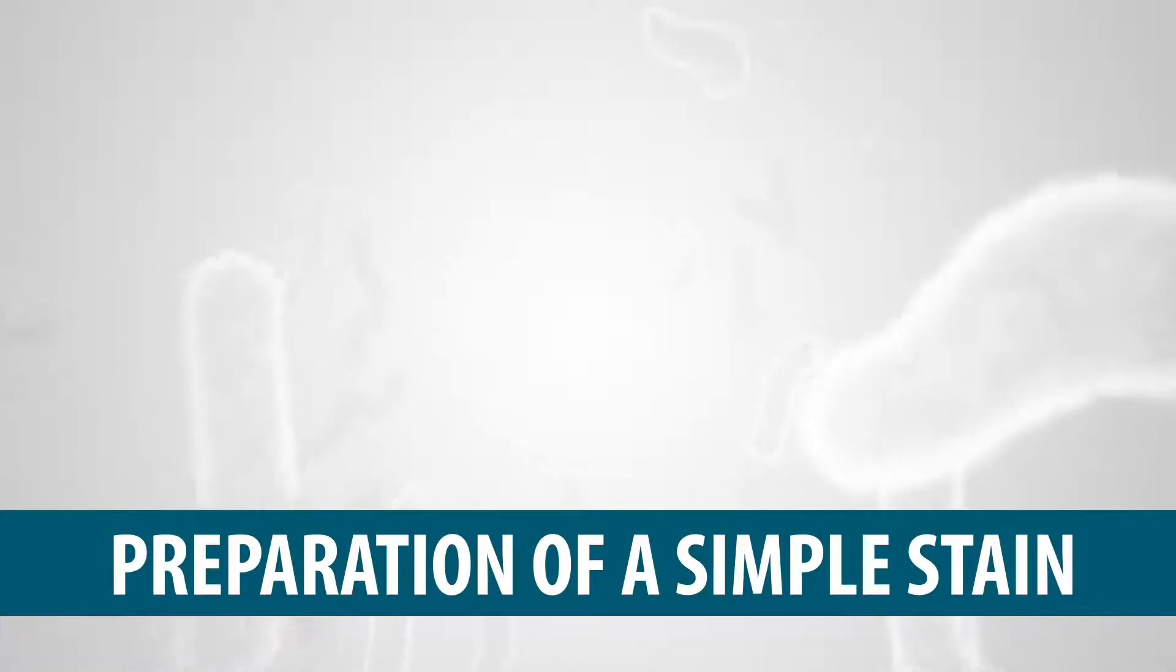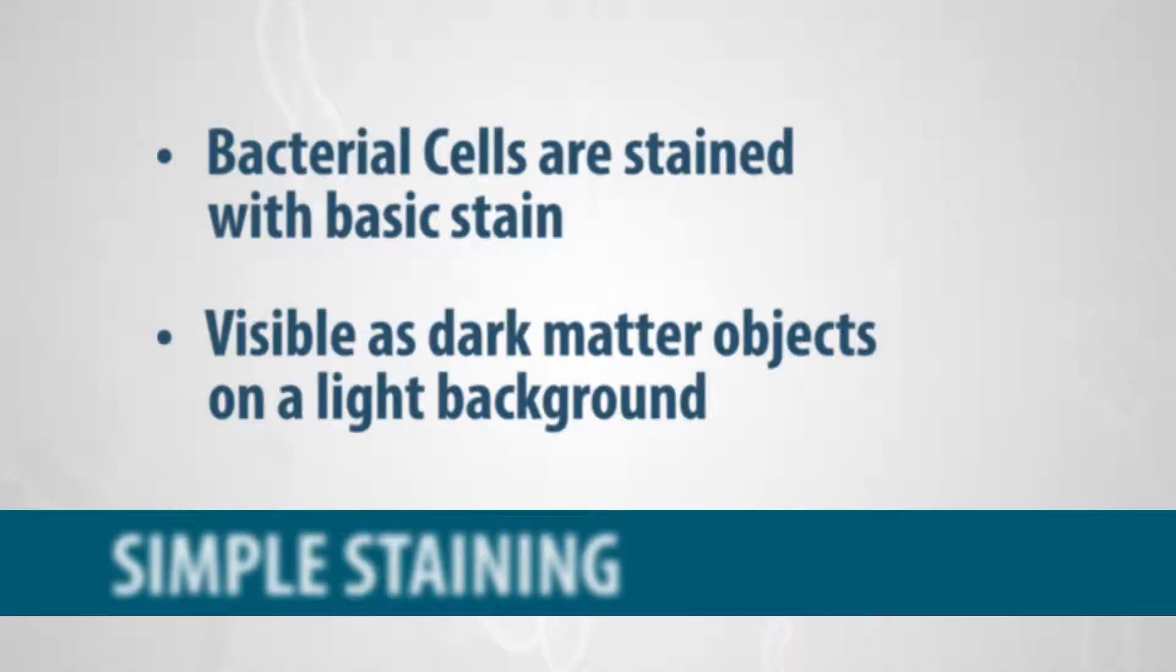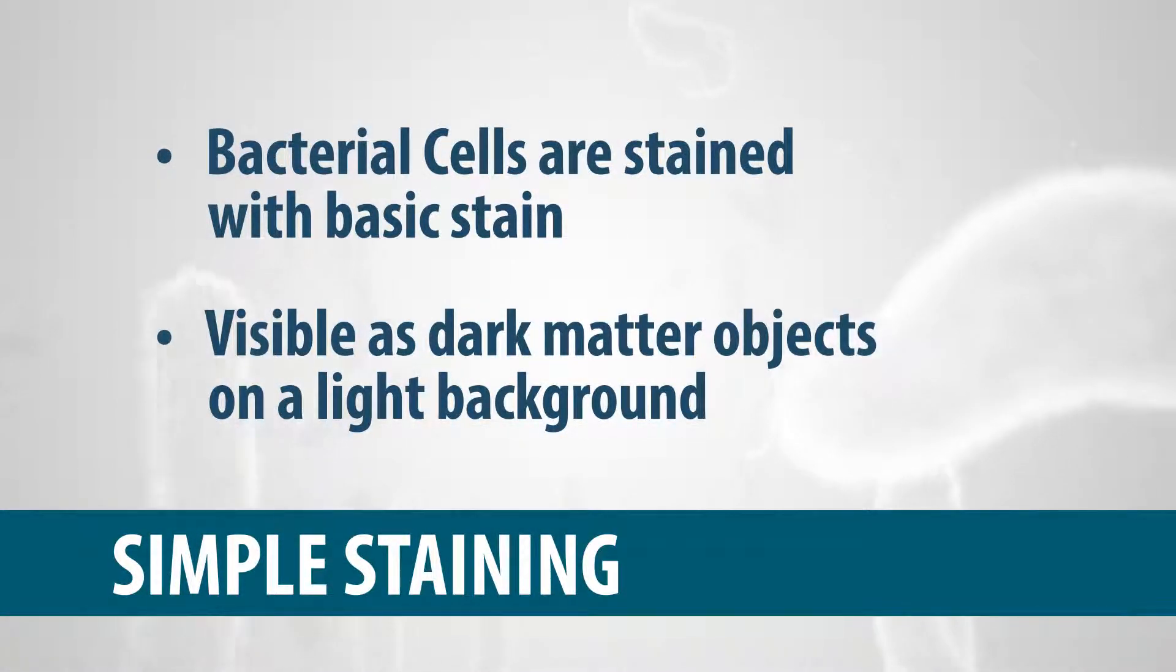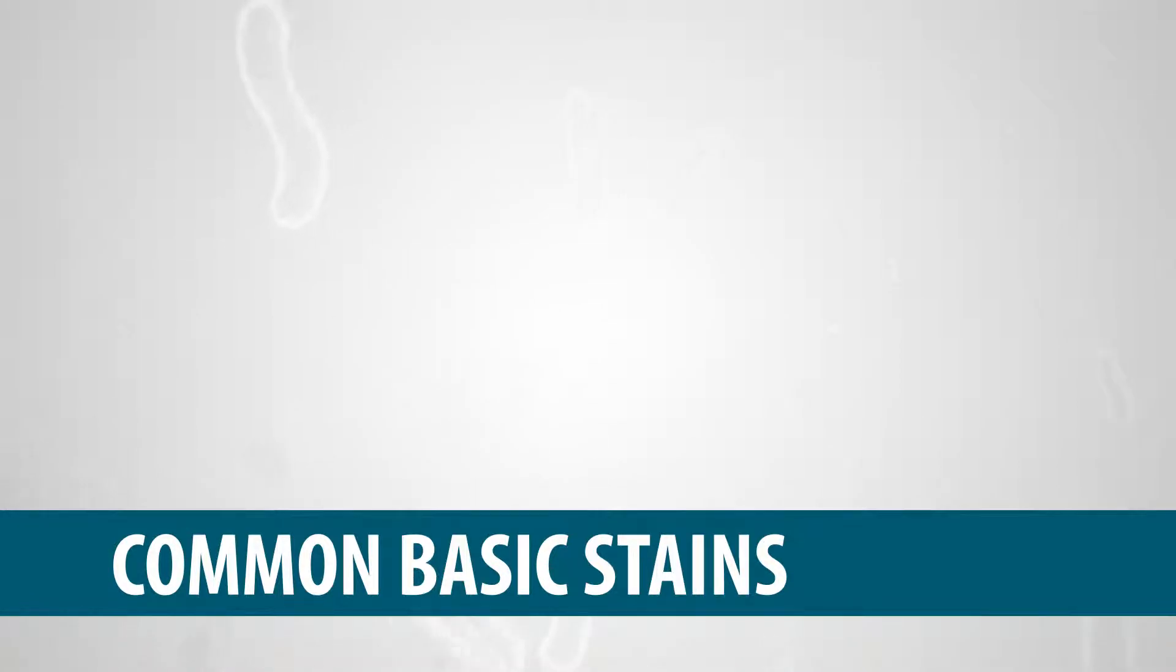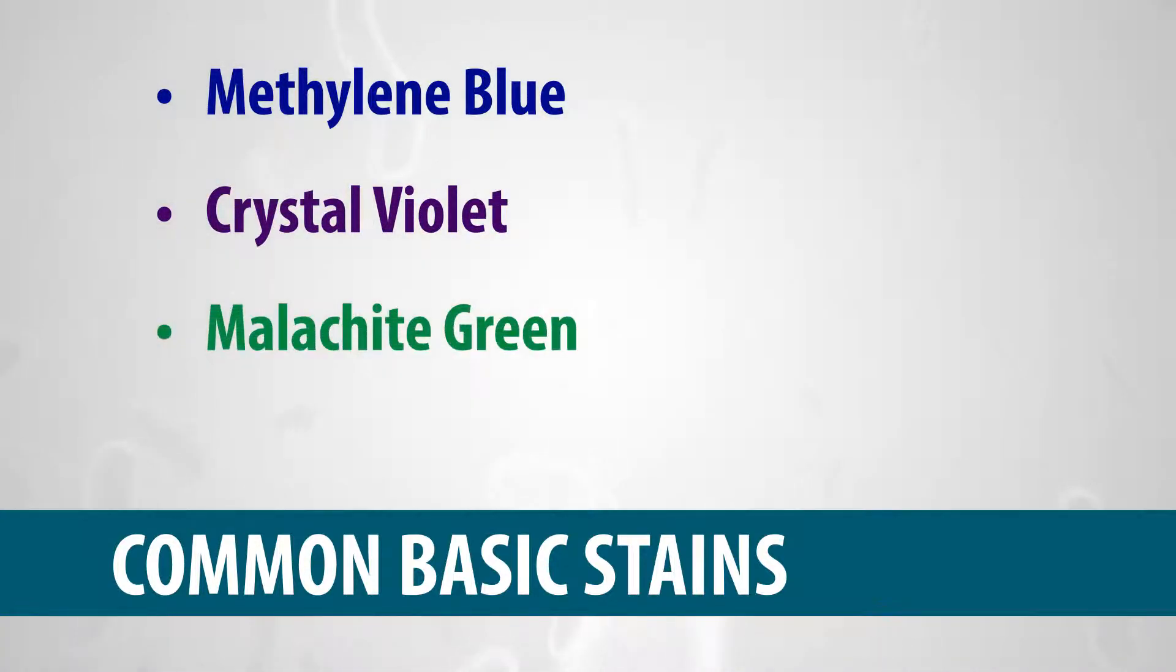Preparation of a Simple Stain. In simple staining, the bacterial cells are stained using a basic stain to determine their size, shape, and cell arrangement. The cells are visible as dark objects against a light background. Common basic stains in the microbiology laboratory include methylene blue, crystal violet, malachite green, and safranin.